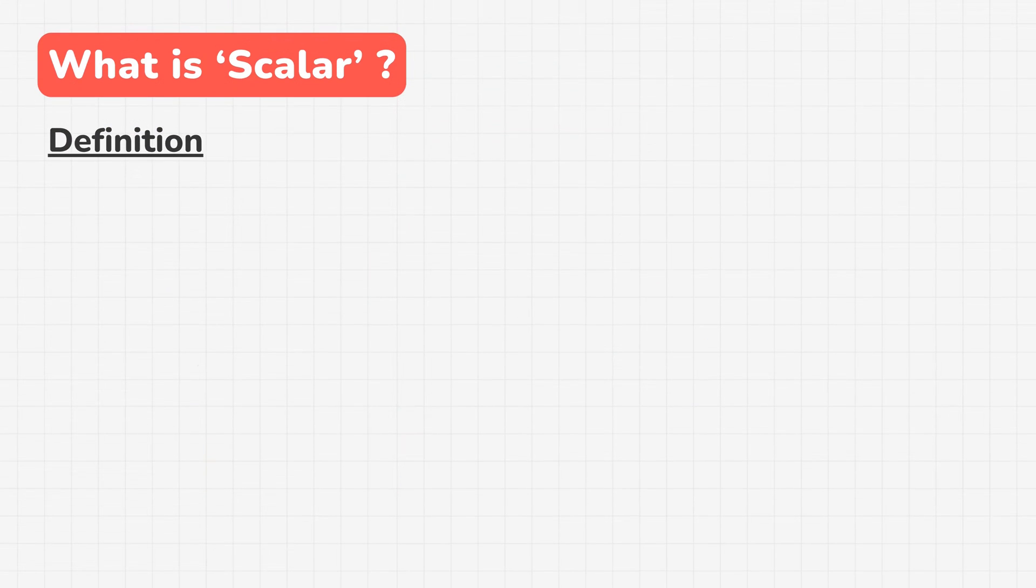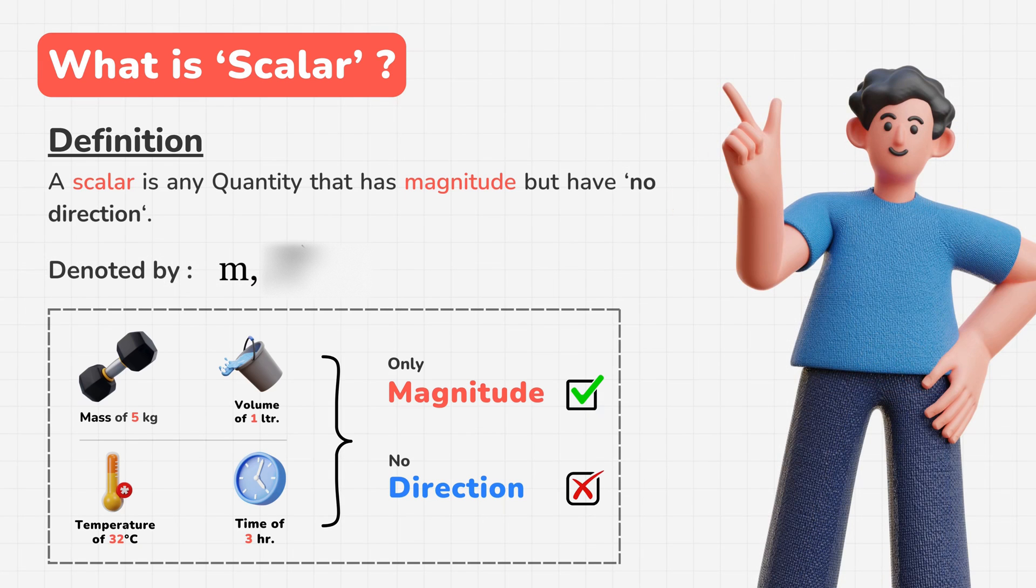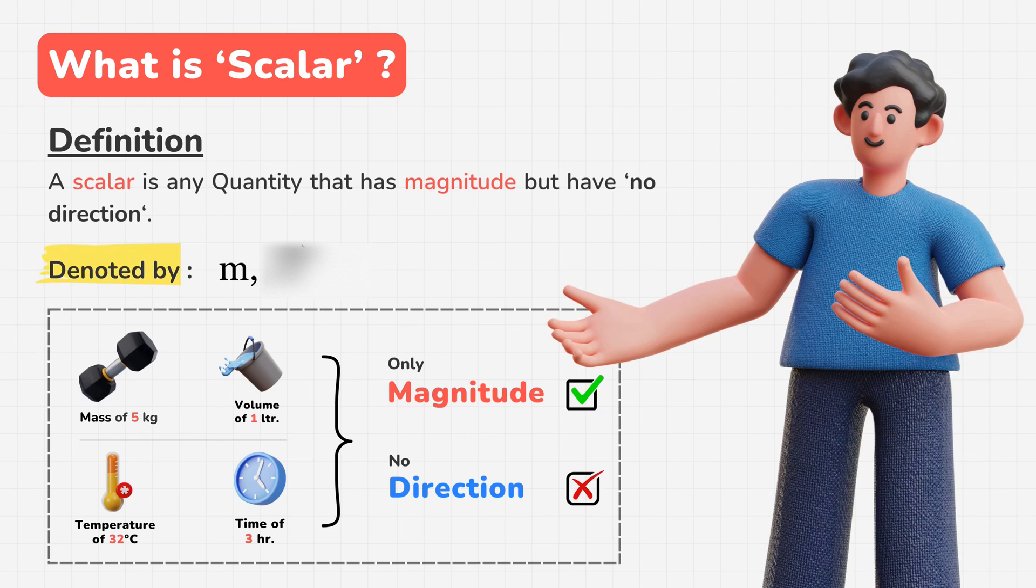So by definition, a scalar is any quantity that has magnitude but not a direction, and these scalars are usually denoted by simple letters, just like this.